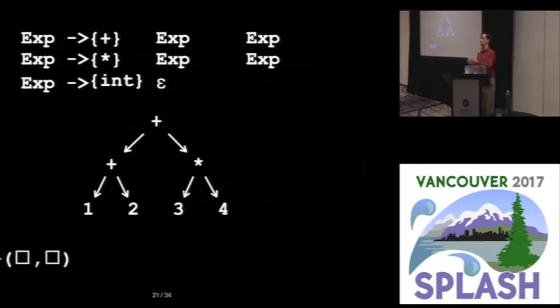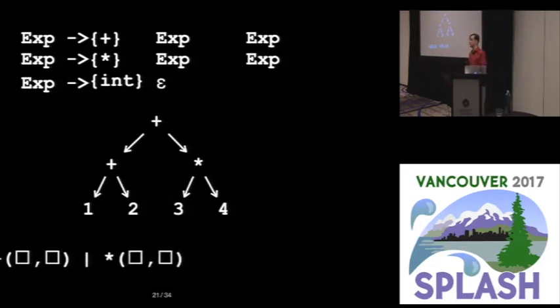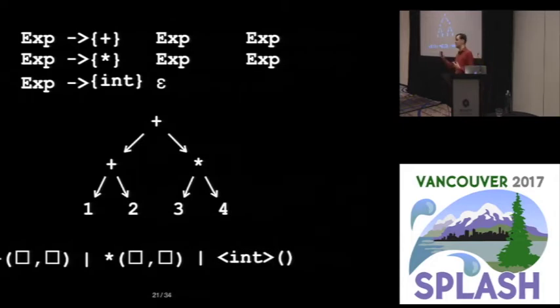So for example, we could say plus, we're allowed to see one of those. And a plus is going to have children. Now what this box represents is continue matching at whatever the next sequencing operator is. So we'll come back to that. We can also see a star. And finally we can see integers. Integers have no children, so there's nothing in those parentheses.